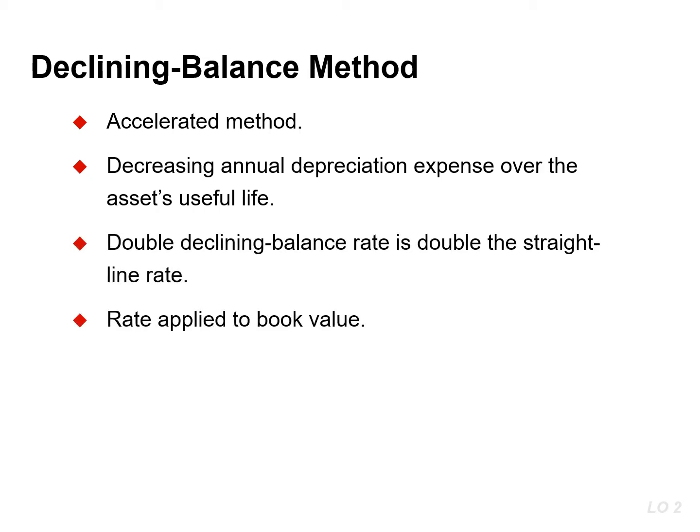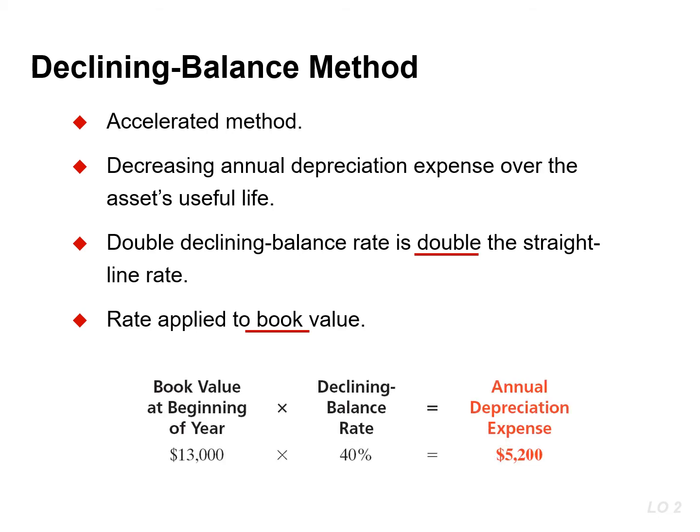The declining balance approach can be applied at different rates. The main method is the double declining balance, which uses a rate that is double or twice the straight line rate. The rate is applied to the book value, so the formula for the double declining depreciation is the book value at the beginning of the year times the rate. The straight line rate was 20%, so this rate is double, or 40%.